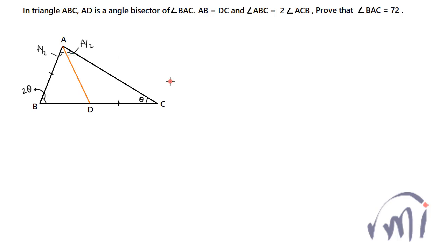If you want to use congruencies, the angles have to be the same and the sides have to be the same. But here this angle is A/2, this angle is A/2, this is 2 theta, this is theta, and these two sides are equal — so the given data doesn't fit into any of the standard congruencies. Isosceles triangles came as a great help.